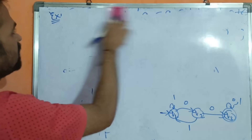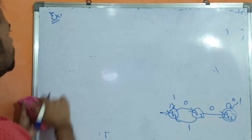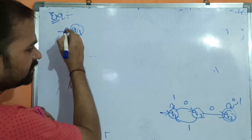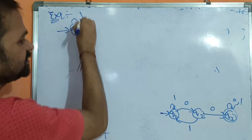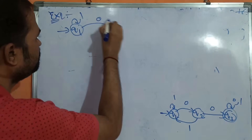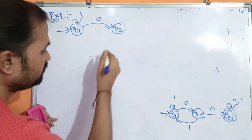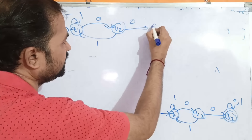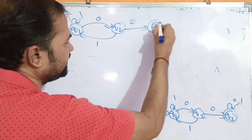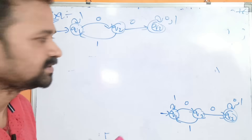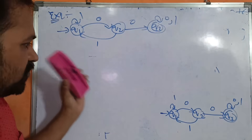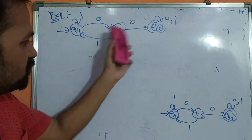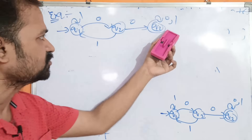In Example 2, Q1 is the initial state. Q1 has a self-loop on 1. Q1 on 0 goes to Q2. Q2 on 1 goes to Q1. Q2 on 0 goes to Q3. Q3 is the final state with a self-loop on 0 and 1. So Q3 is the final state, and we have to solve the Q3 state equation.